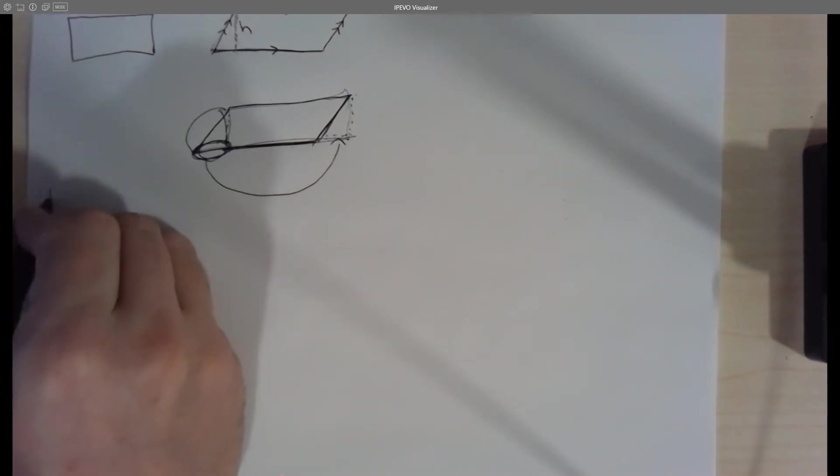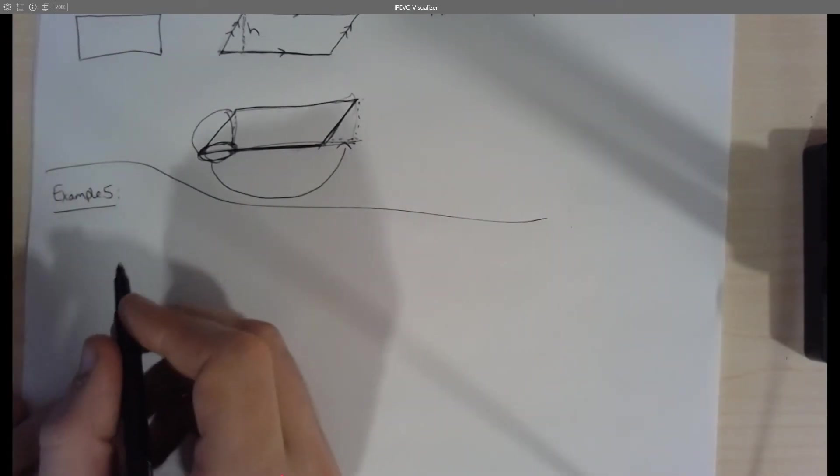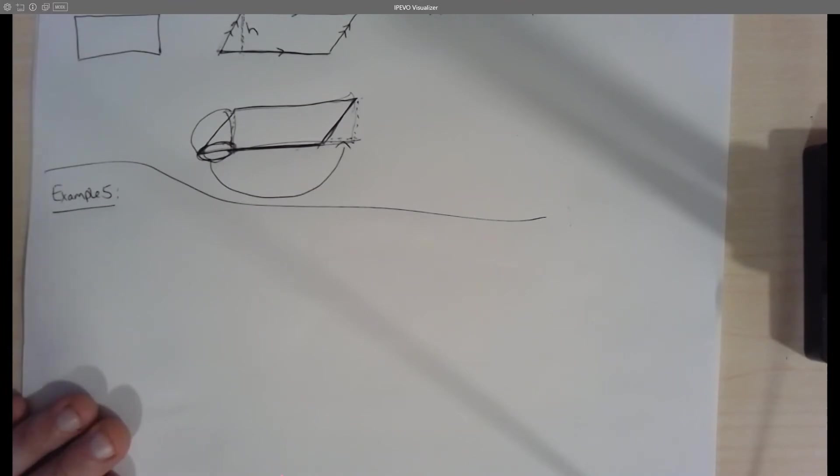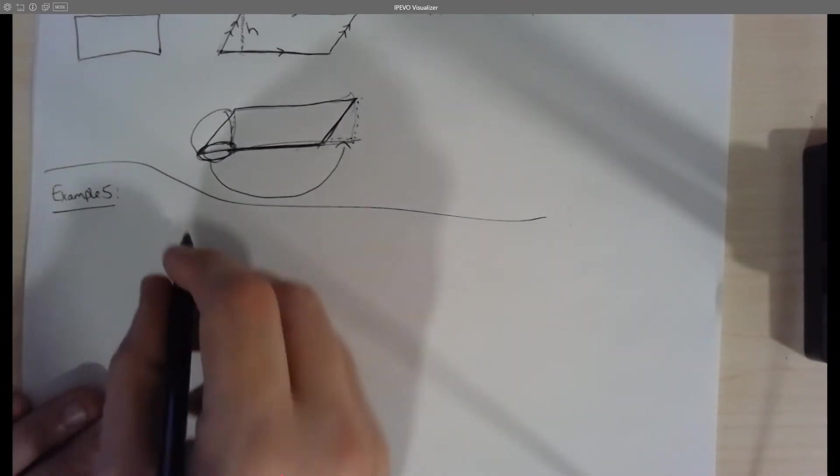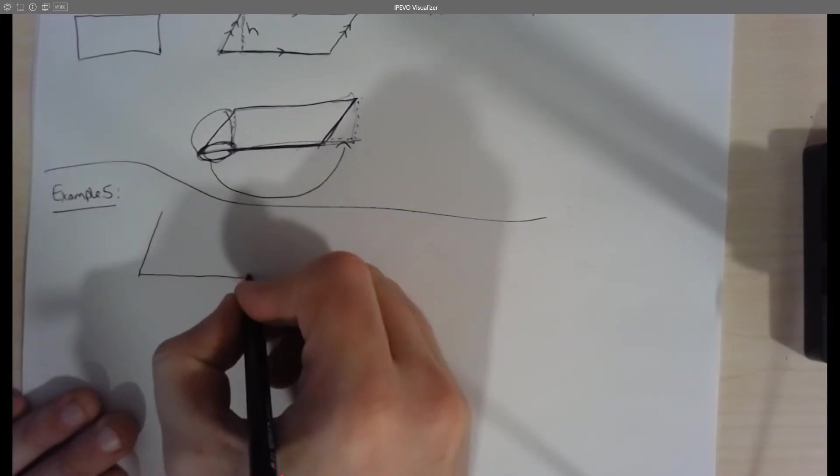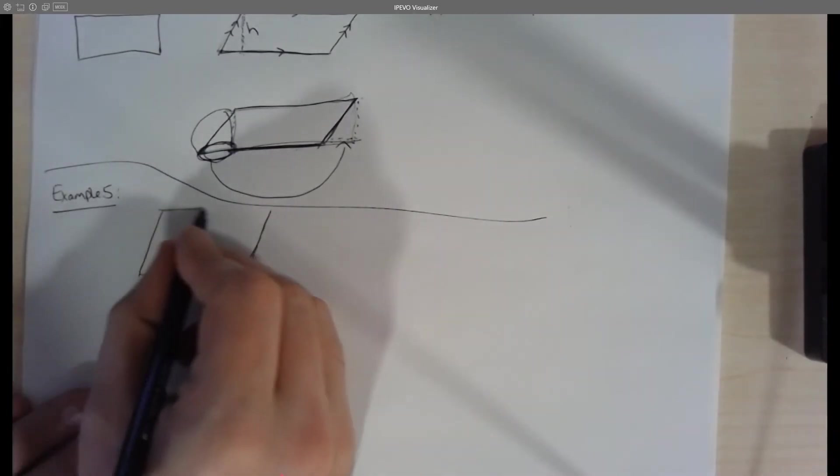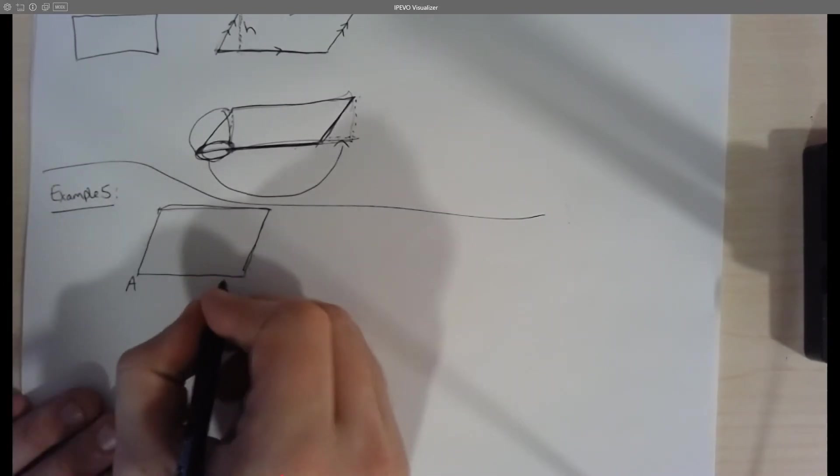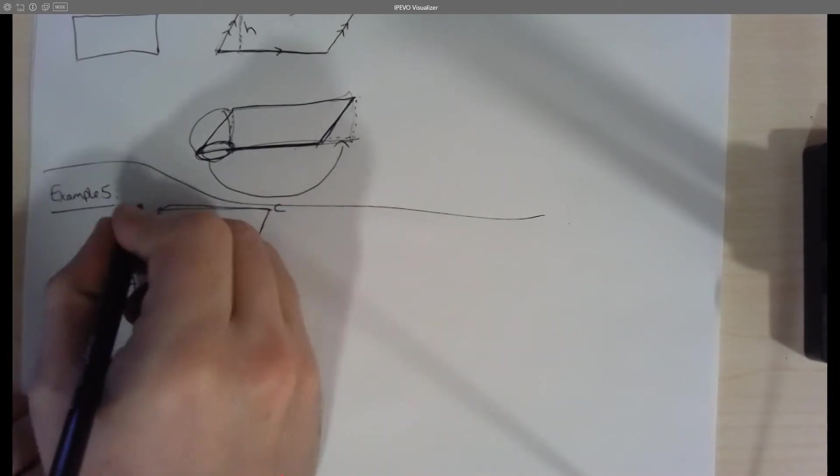Okay, let's go through example five here. So example five says we're given a figure, and it says in the figure A, B, C, D is a parallelogram. So let me draw that here. So we have a parallelogram. We're told it's a parallelogram, at least, and that's labeled A, B, C, and D.